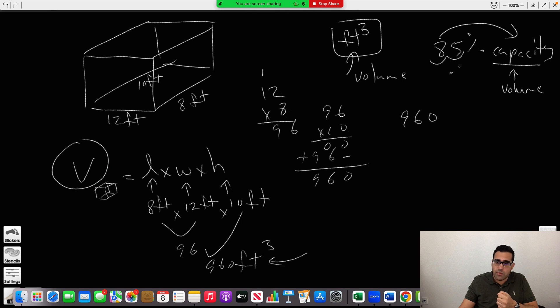So we're applying 0.85: 5 times 0 is 0, 5 times 6 is 30, carry the 3. 5 times 9 is 45, plus 3 is 48. Space. 8 times 0 is 0, 8 times 6 is 48, carry the 4. 8 times 9 is 72, plus 4 is 76. 0, 0, 8 plus 8 is 16, carry the 1. 6 plus 4 is 10, plus 1 is 11, carry the 1. 1 plus 7 is 8. And now you say 2 back, 2 forward: 816.